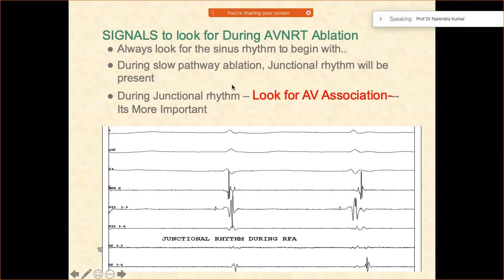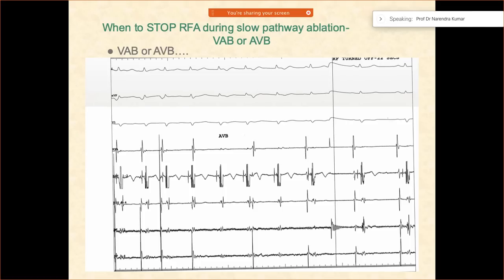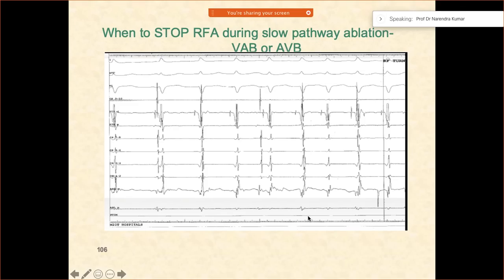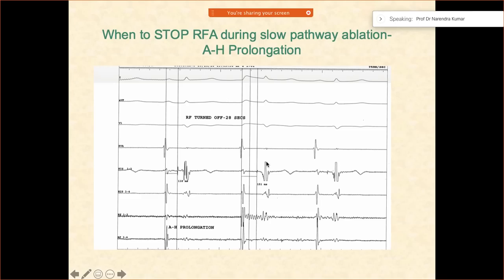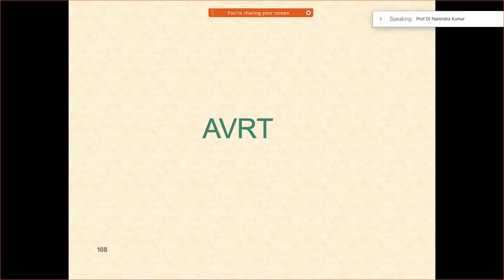In these junctional rhythms, always try to look out for AV dissociation. If there is AV dissociation, immediately stop — you are at the wrong place and you can cause a block which is going to be dangerous for the patient. Whenever there is AV block — whenever you stop seeing A's during the ablation — you must always stop. Similarly, if you see that the AH is getting prolonged, that is again an indirect sign that you should immediately stop.